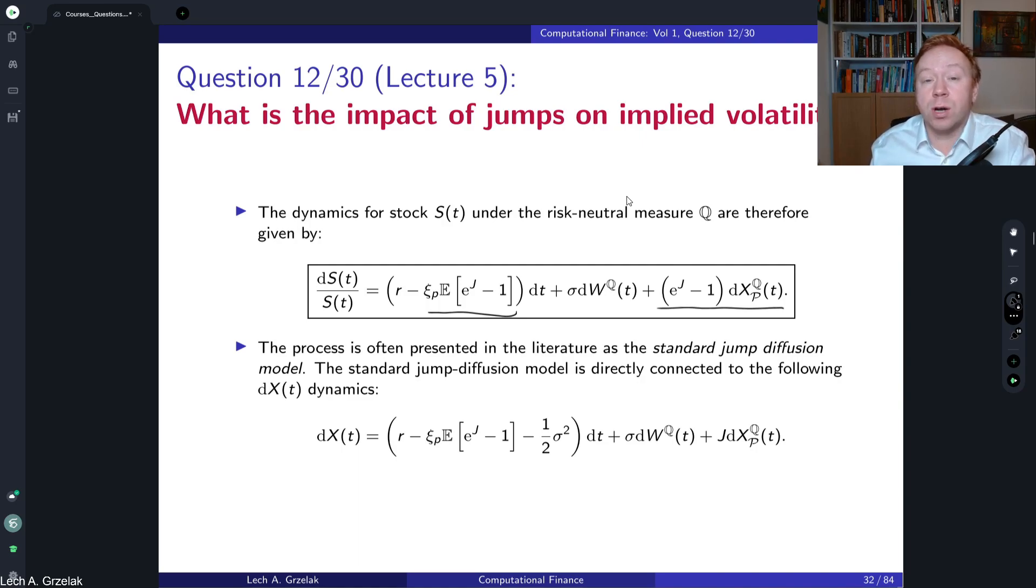This question is about the impact of jumps on implied volatilities. This is the generic formulation for the process if we consider jumps. We could also have, say, a Heston model where the volatility will be driven not only by a constant number but also by a stochastic process. However, here we have a very clean model because we know that geometric Brownian motion doesn't generate any skew or smile, so we can only focus on the effect of jumps. If we had Heston model and added jumps, we could argue what is the impact of Heston model parameters versus the jumps. Now it's very clean because we have a model without jumps, without any skew, so we can analyze the impact of the jump j.